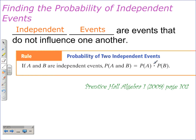The most important thing to understand here is the multiplication. When you're finding the probability of a compound event, we're going to be multiplying those two probabilities to find the overall probability. We've got two parts and a whole — we find the whole by multiplying. Event A happens first, then B happens second. Let's take a look at a couple examples involving independent events.